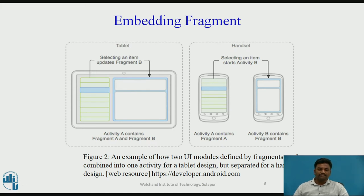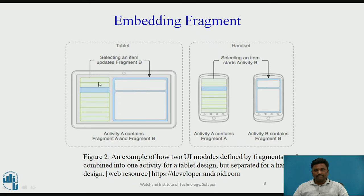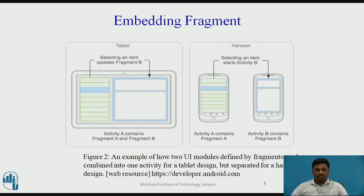Now, embedding a Fragment. This is how a Fragment looks when you embed it. There are two versions — you can see multiple Fragments: Section 1 and Section 2. When you load Fragments inside a tablet versus a mobile phone, the view changes accordingly. For a given Activity, there are two Fragments — an upper part and a lower part. On mobile, the same application shows Section 1 and Section 2 in a different layout.